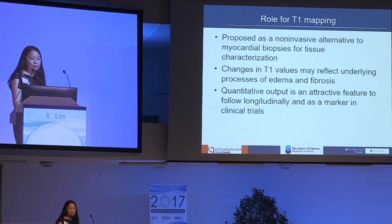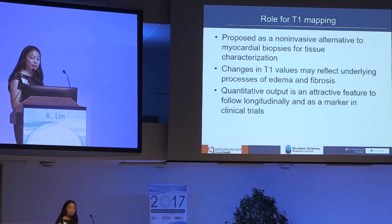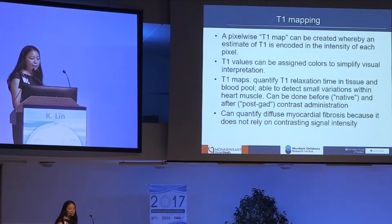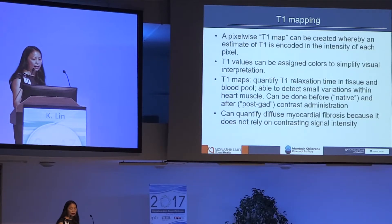T1 mapping has been proposed as a non-invasive alternative to myocardial biopsies to better characterize myocardial tissue, because changes in T1 values may reflect underlying processes of either edema or fibrosis. It is very attractive as a quantitative output that can be followed longitudinally and used as a marker in clinical trials. A pixel-wise T1 map can be created whereby an estimate of T1 is encoded in the intensity of each pixel, summed and averaged throughout the heart. T1 values can be assigned colors to create a visual map, quantifying relaxation time in tissue and blood pools.